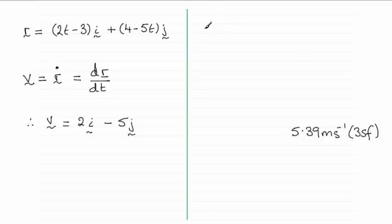So when it comes to working out the speed, then remember the speed is given as the magnitude of the velocity vector. So if I just put that in that notation, okay.